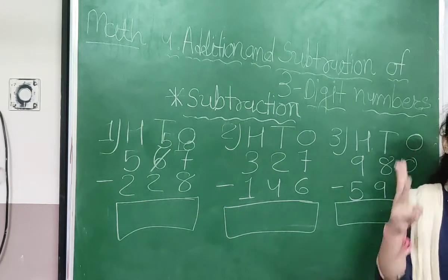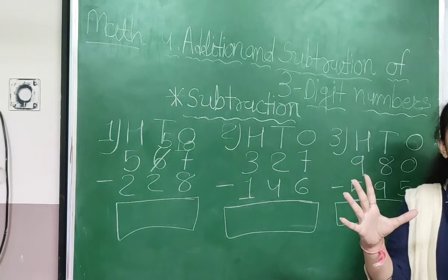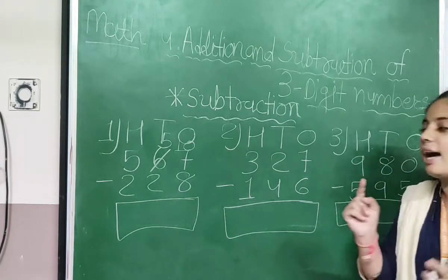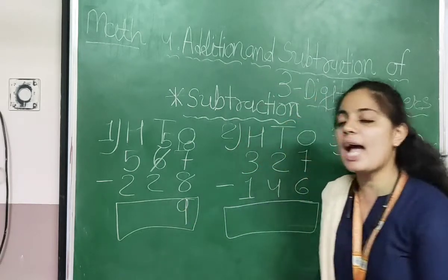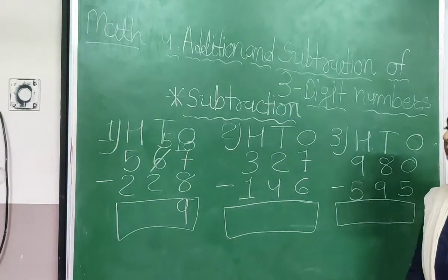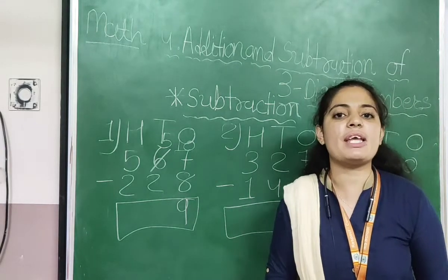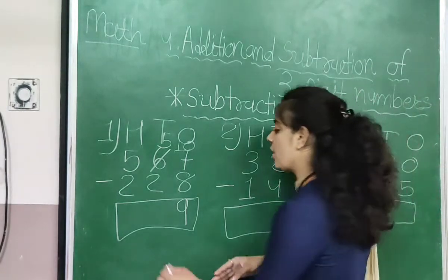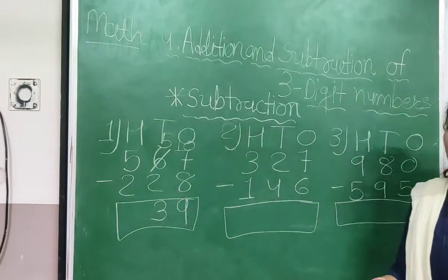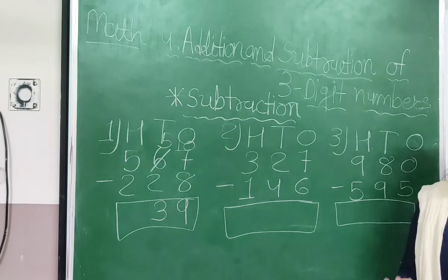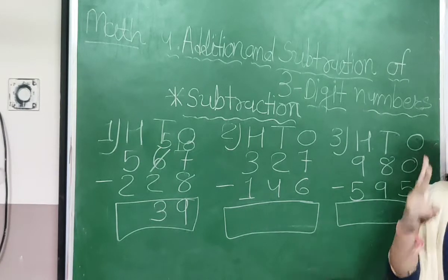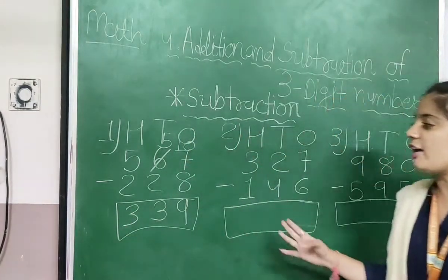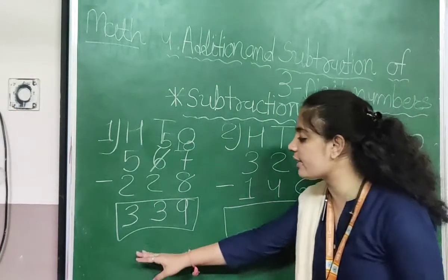Count from 8: 9, 10, 11, 12, 13, 14, 15, 16, 17. So 17 minus 8, our answer will be 9. Now 5 minus 2 — count from 2 until you reach 5: 3, 4, 5. Our answer will be 3. Here also 5 minus 2, the answer is also 3. So 567 minus 228, our answer is 339.